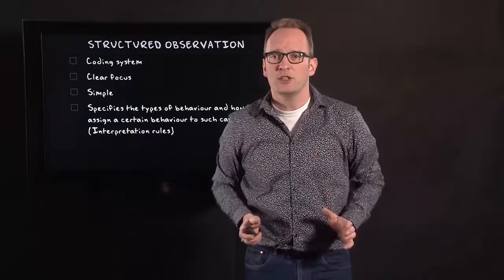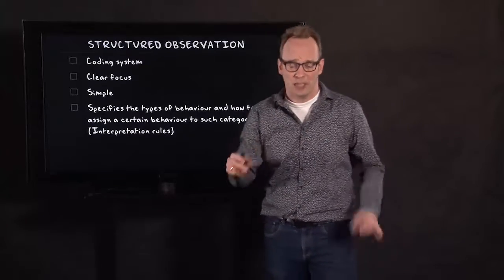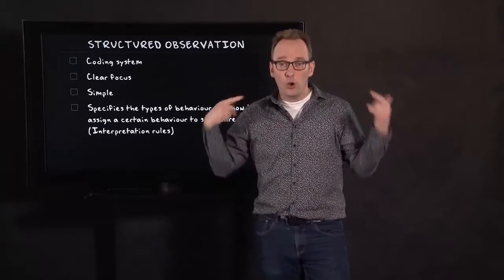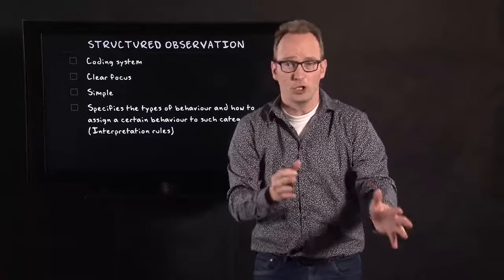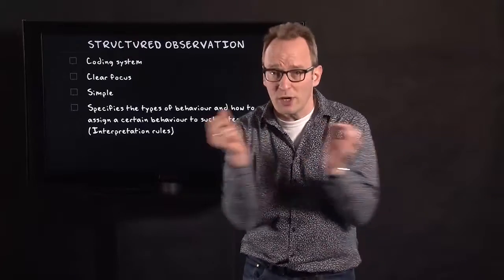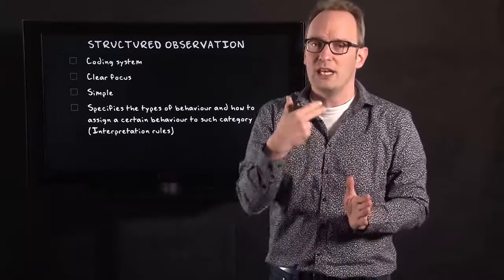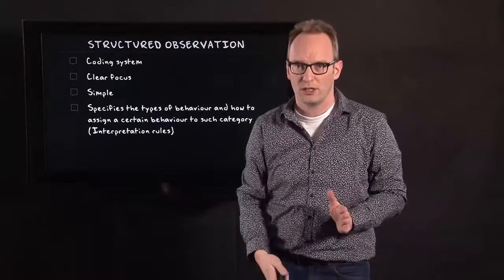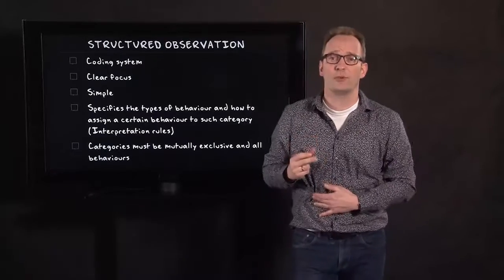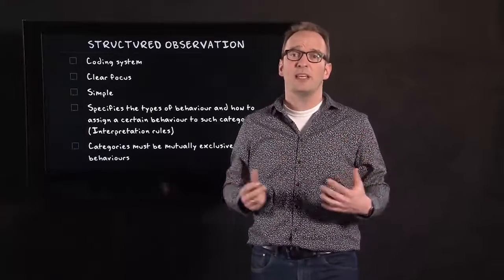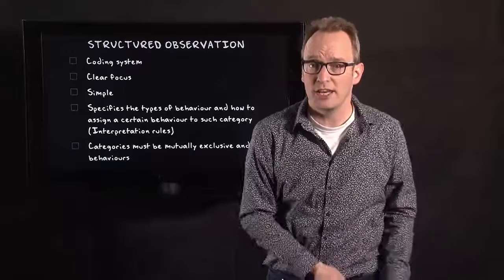You need this system in order to specify types of behavior to certain specific categories. It means you need rules of interpretation. And these rules of interpretation need to be on your sheet, need to be on your computer, on your telephone or whatever you use. You have these rules directly in the field. So you use a coding system within the field and you structure your observation. And the categories you use within this type of observation, these categories have to be mutually exclusive. If it fits in one category, it cannot fit into another category.